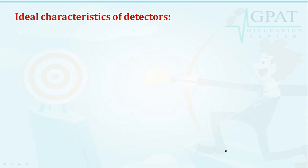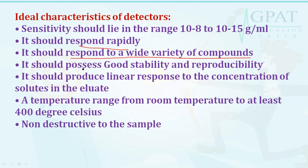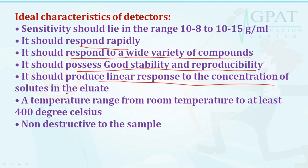Ideal characteristics of a GC detector: it should be sensitive in the range of 10⁻⁸ to 10⁻¹⁵ grams per mL; it should respond rapidly; it should respond to a wide variety of compounds; it should have good stability and reproducibility; it should produce a linear response to the concentration of solute in the eluate; a temperature range from room temperature to at least 400°C; and it should be non-destructive to the sample.